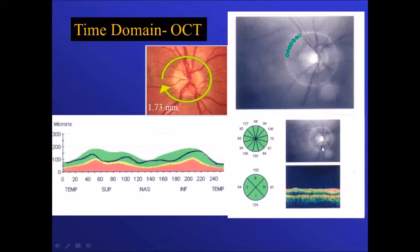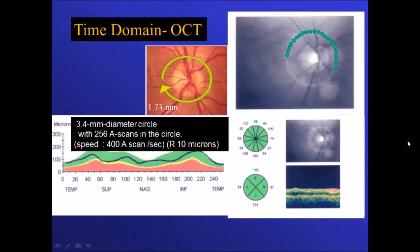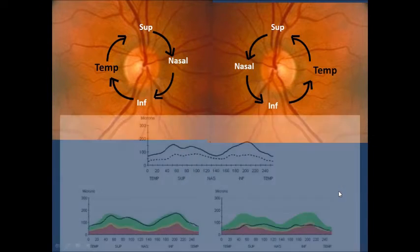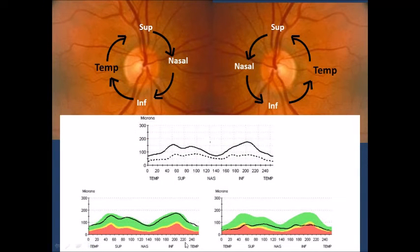In time domain, examination is done around a circle of diameter 3.4 millimeters, and 256 A-scans are applied. It starts with the temporal, then going to the superior, nasal, inferior, and back to the temporal. Normally we have increased thickness in the superior and inferior parts of the retinal nerve fiber layer, and this is the comparison between the two eyes.